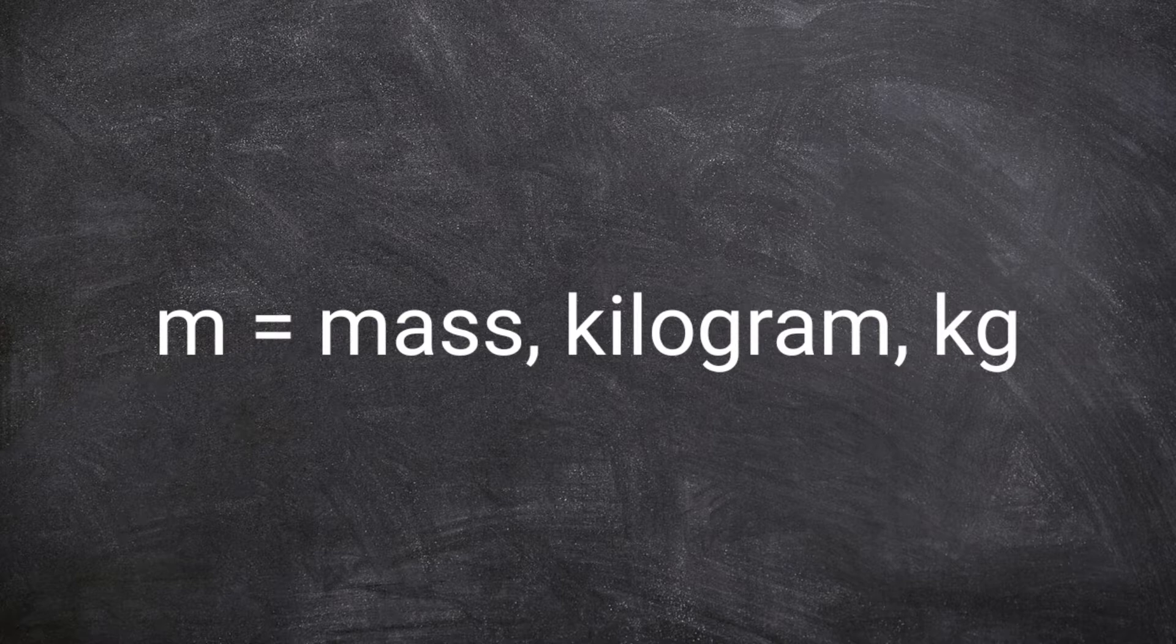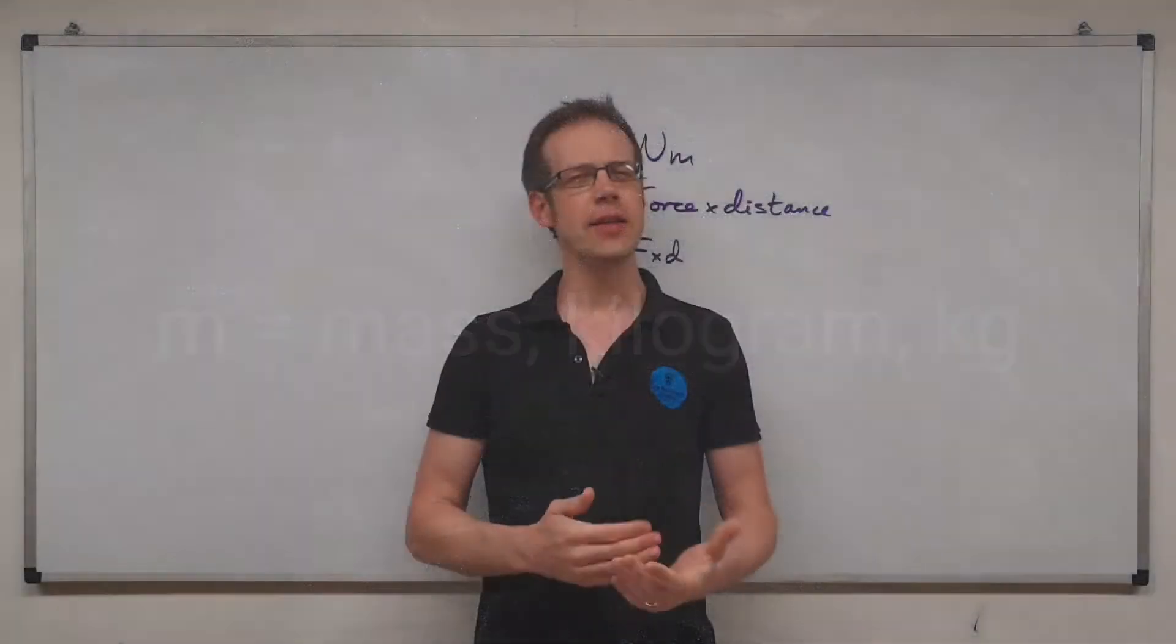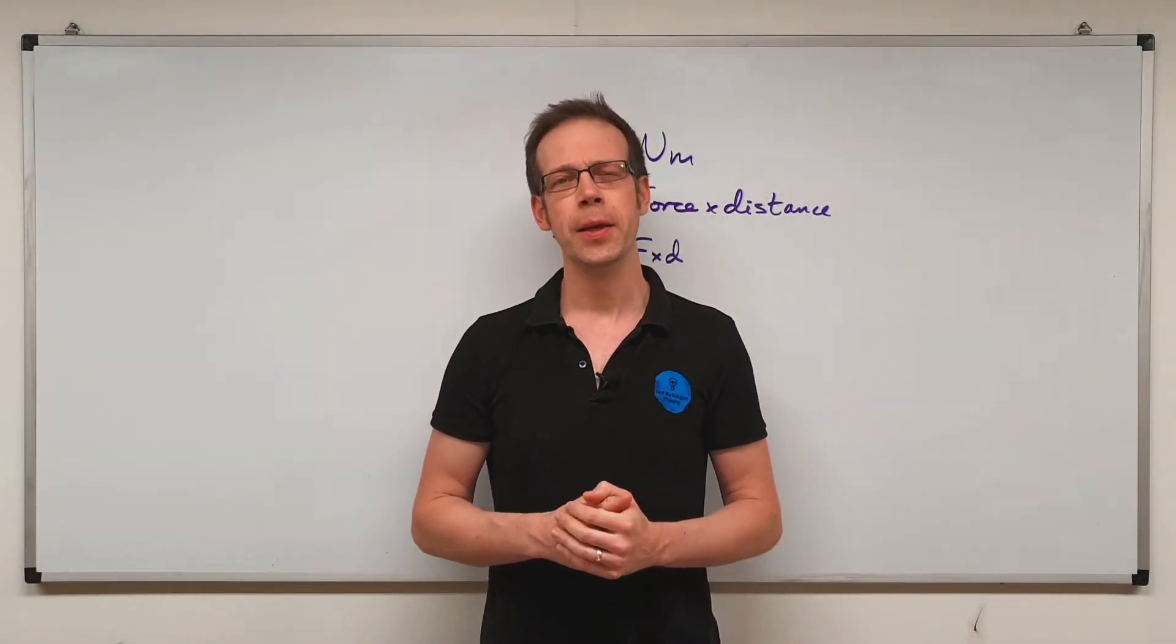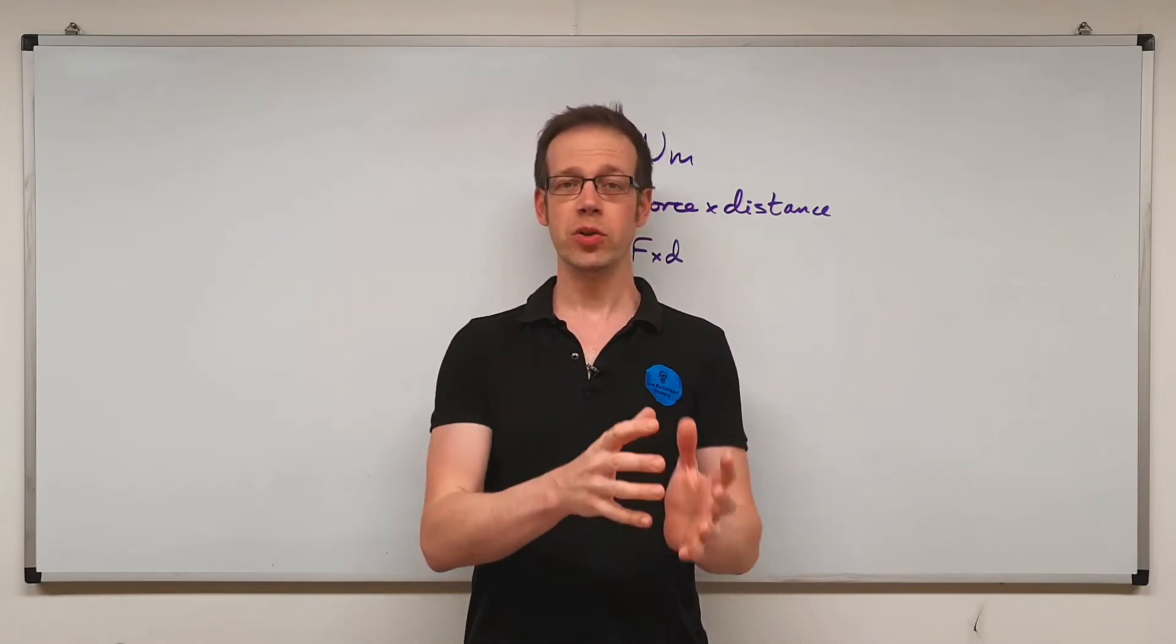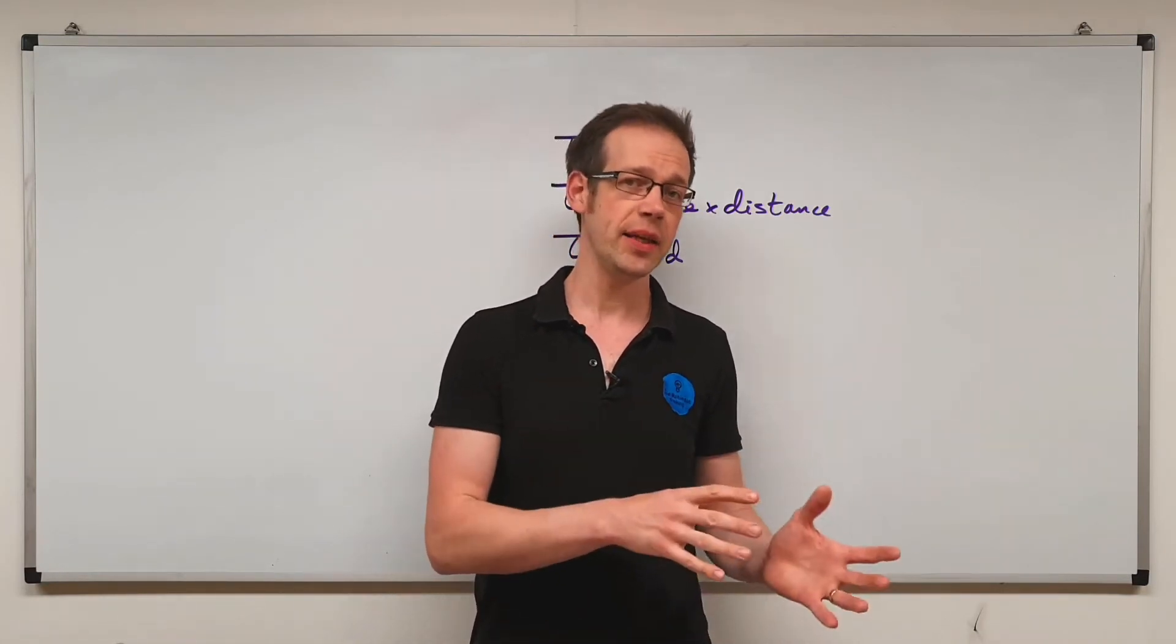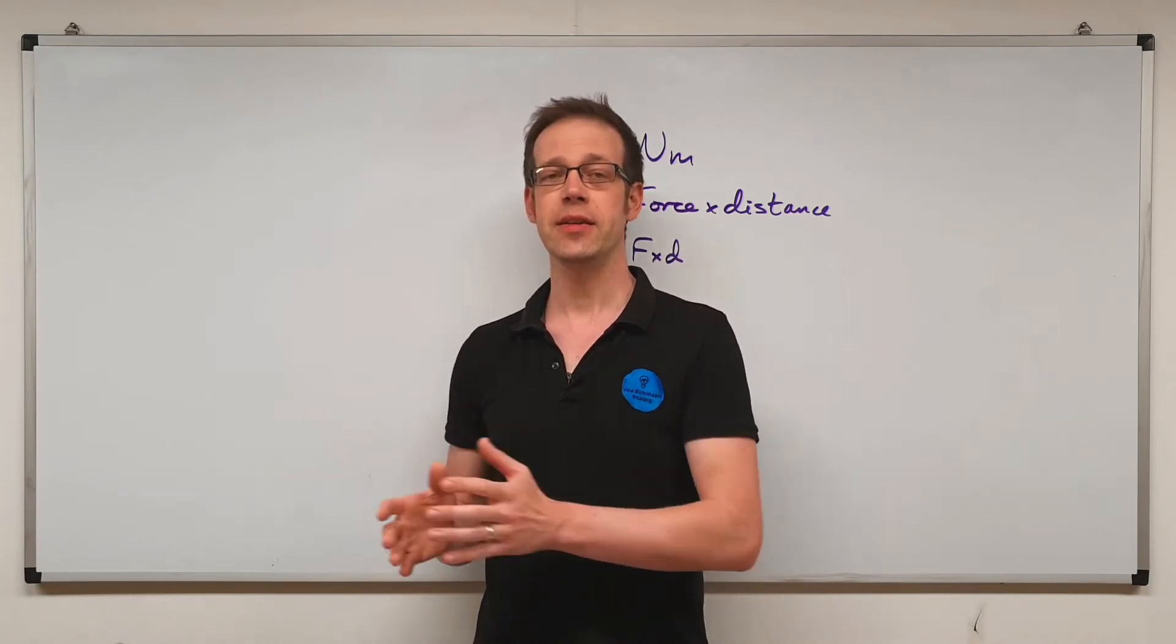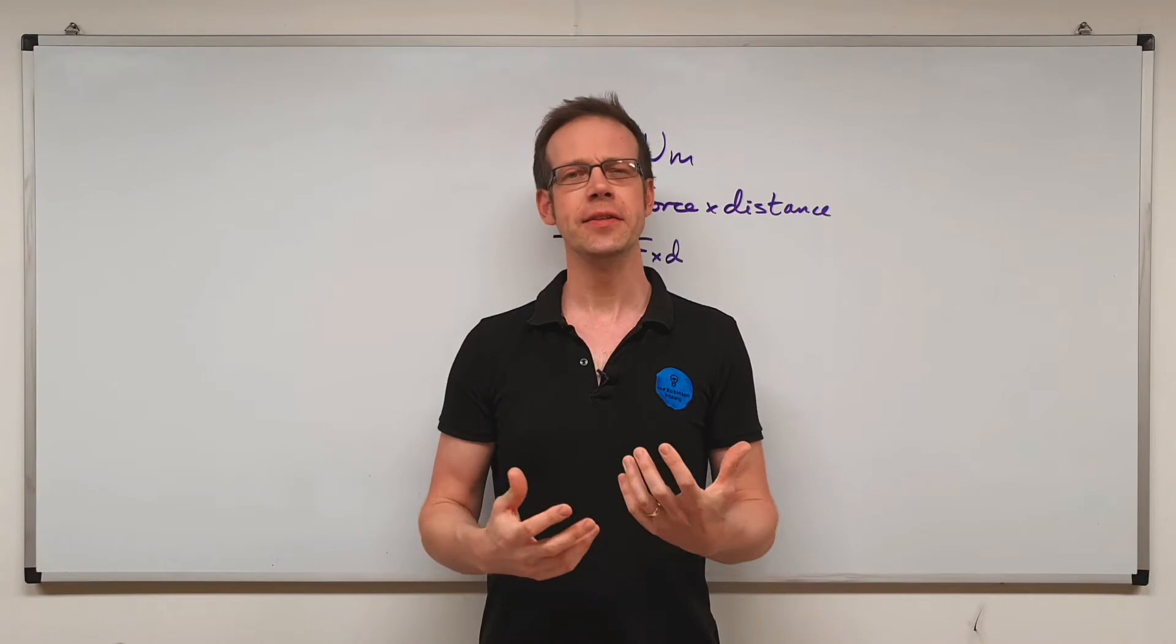So in the SI system we use the mathematical symbol m, lowercase m, to represent mass, and mass under the SI system is measured in kilograms. That gives us the unit symbol kg, with a lowercase k for kilo and the g for grams. Now this is an interesting one, it's a little bit of an aberration within the SI system, because it's the only unit where the base unit has a multiple in front of it.